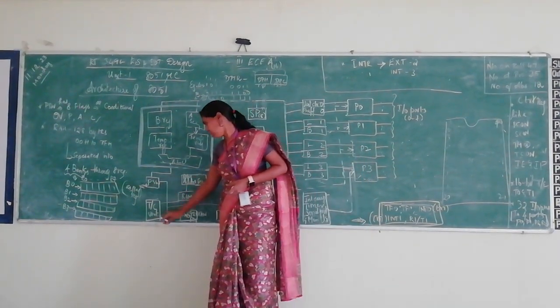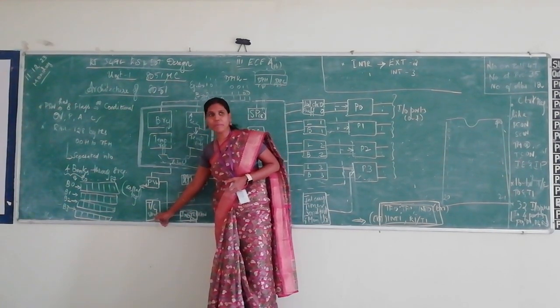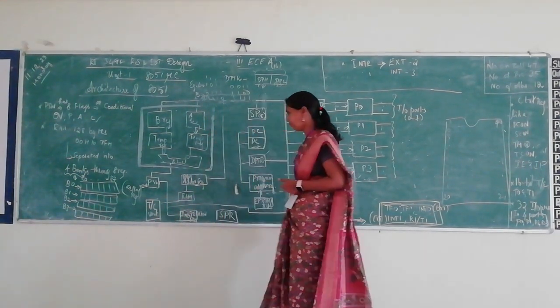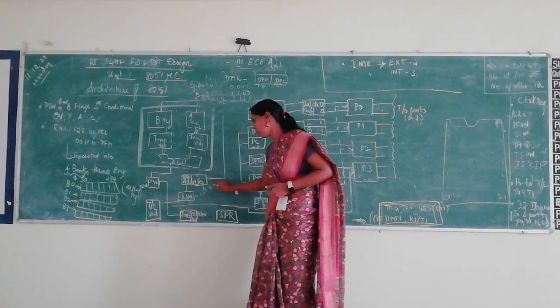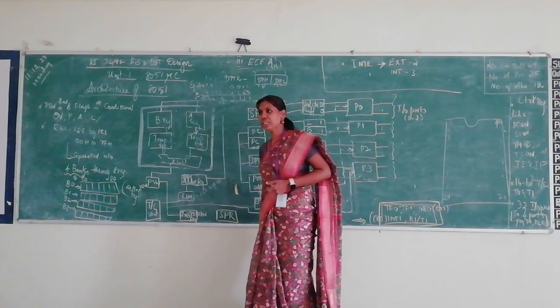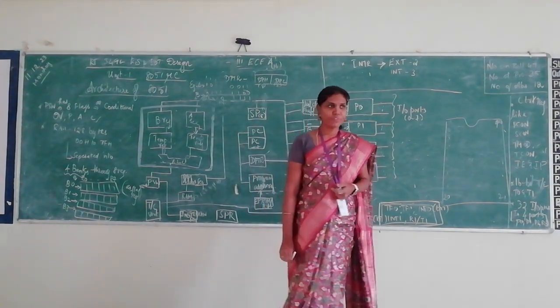That is how set the program status word. And also you have a timer control unit. When you can, you have a RAM of 128 bytes. Know that very well. 128 bytes of RAM. And ROM memory of 4KB.